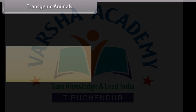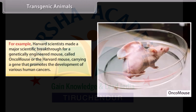For example, Harvard scientists made a major scientific breakthrough with a genetically engineered mouse called Oncomouse, or the Harvard mouse, carrying a gene that promotes the development of various human cancers.